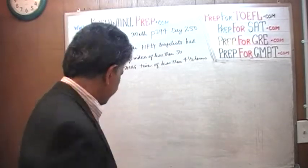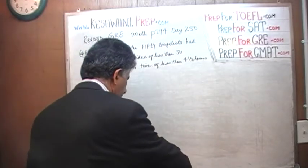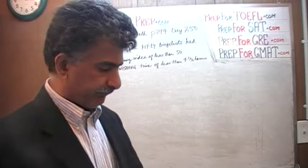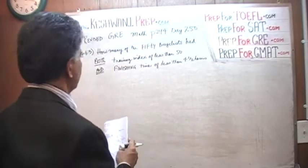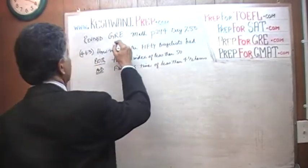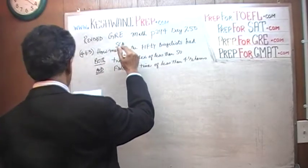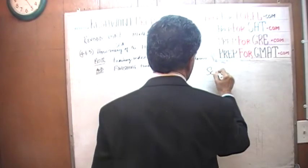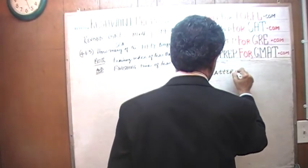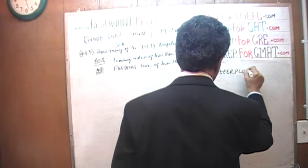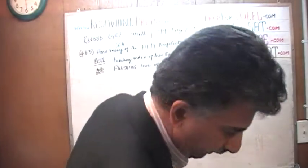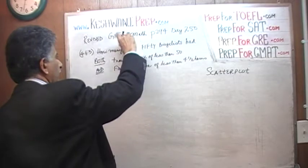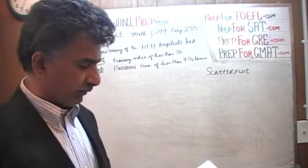The graph that we see in front of us is known as a scatter plot, as opposed to a pie chart or a regular graph. This is called a scatter plot.